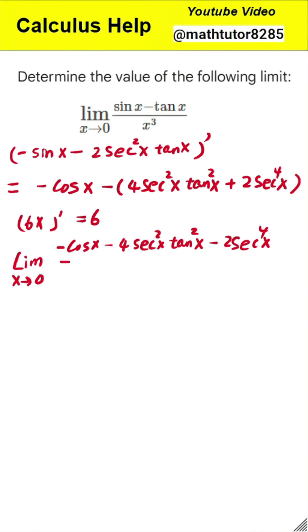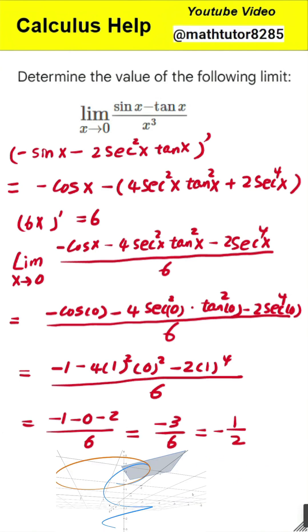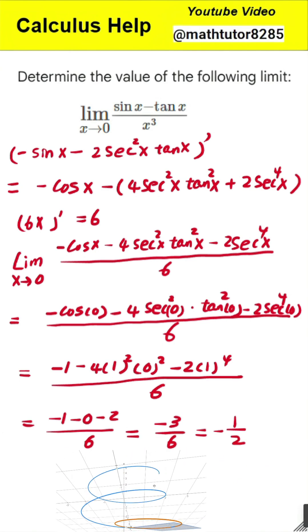Now, we can substitute 0 for x into this final expression. The numerator becomes negative cosine of 0 minus 4 times secant squared of 0 times tangent squared of 0 minus 2 times secant to the fourth of 0. This calculates to negative 1 minus 0 minus 2, which equals negative 3. The denominator is 6. Therefore, the final answer is negative 3 divided by 6, which simplifies to negative 1 half.